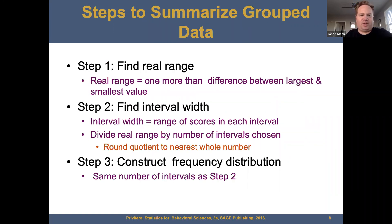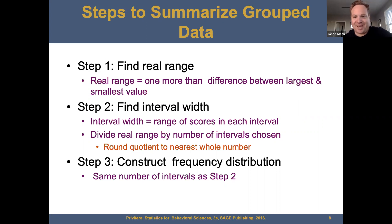So some steps to summarize grouped data. First, we want to find the real range. The real range is one more than the difference between the largest and the smallest value — it's actually 0.5 above and below. For example, if I have a range of 1 to 10, the real range is technically 0.5 to 10.5. We'll do some assignments that I'll walk you through that will explain how to calculate that.